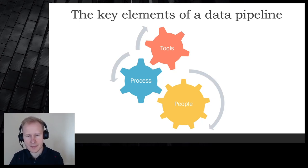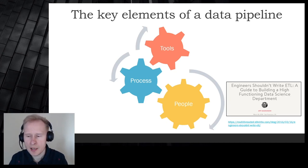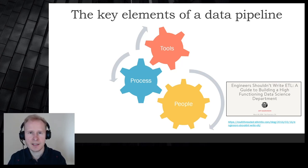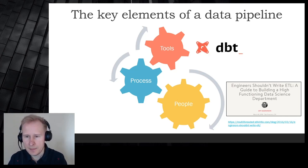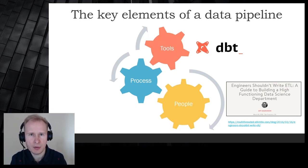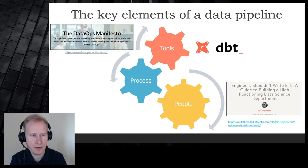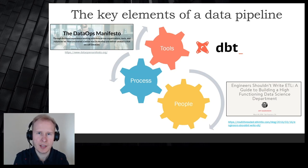Coming back to our three components — tools, process, and people — when it comes to people, I really like this article by Jeff Magnuson where he expressed that engineers should own their data end-to-end. Essentially, whether you are a data analyst, data scientist, or data engineer, all should be responsible for all aspects within the data pipelines. And for processes, we have a brilliant DataOps manifesto built on the Agile manifesto.